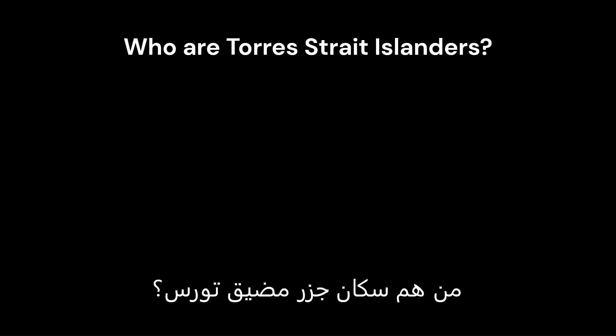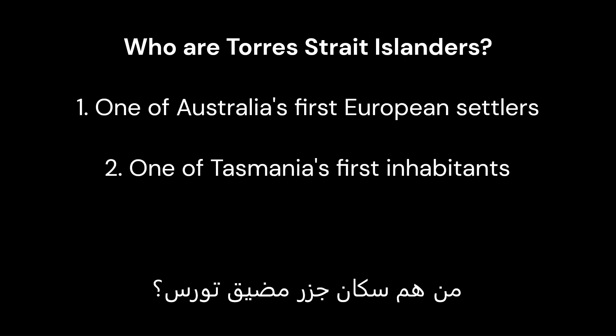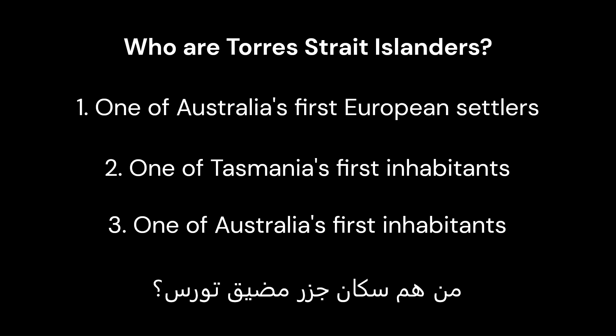Question 6: Who are Torres Strait Islanders? Option 1: One of Australia's first European settlers. Option 2: One of Tasmania's first inhabitants. Option 3: One of Australia's first inhabitants. Correct answer is 3: One of Australia's first inhabitants.